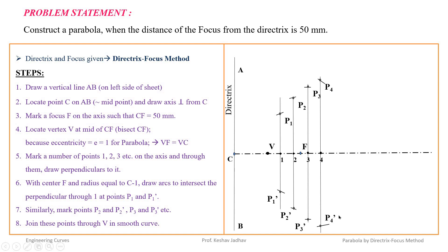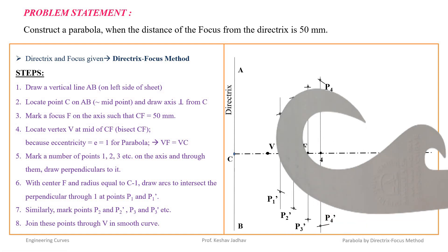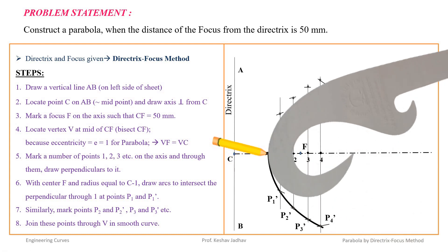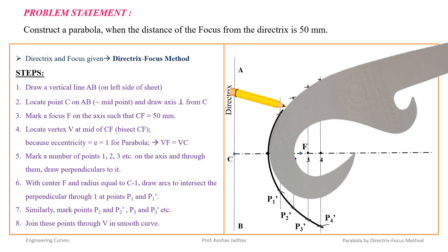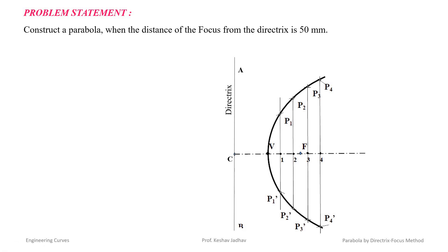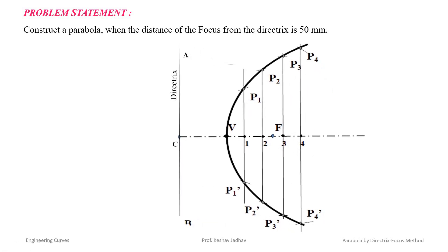In this way we get a number of points, which we can join to get a parabola. Using a French curve, match its arc with these points and draw the curve. Since the curve is symmetric about the axis, flip the French curve and match the points on the upper side to complete the parabola. Give the dimension: distance of focus from the directrix is 50 mm.